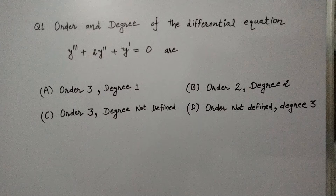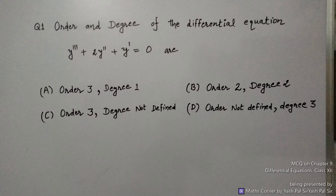Question number 1: Find the order and degree of the differential equation y''' + 2y'' + y' = 0. There are 4 choices, out of these four choices we have to select one right choice. You can take two minutes time here.